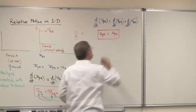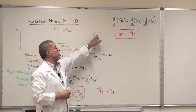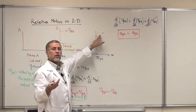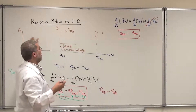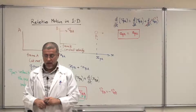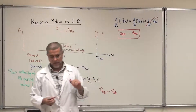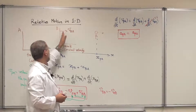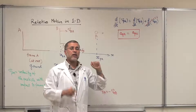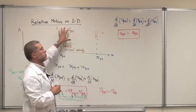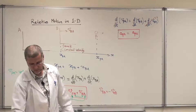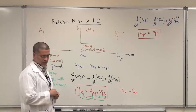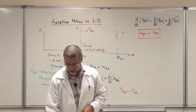The acceleration equation says that the acceleration of the particle is the same whether you measure it from frame A or frame B — it is the same value. This is because frame B is moving at constant velocity. So this is the key idea about relative velocity in one dimension.